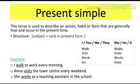Simple present tense is used to describe an action, habit, or facts that are generally true and occur in the present time. Structure: subject plus verb in present form. For example: I walk to work every morning; Anna visits the town center every weekend; she works as a teaching assistant in the school.